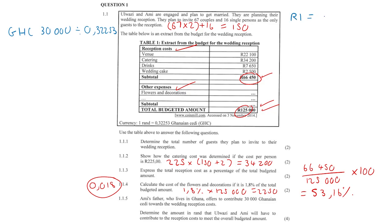So 1 rand is equal to 0.32253 GHC. In other words, one of ours is only 0.3 of theirs. So 0.3 of theirs, a little bit, not even one, is a whole 1 rand. So theirs is definitely stronger, which is why we divide.